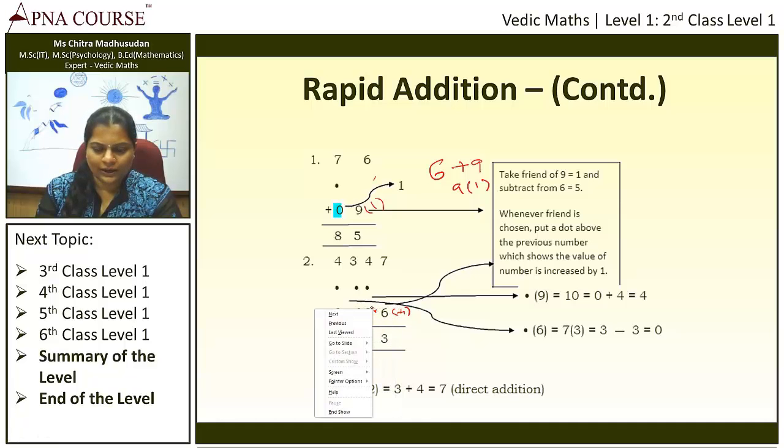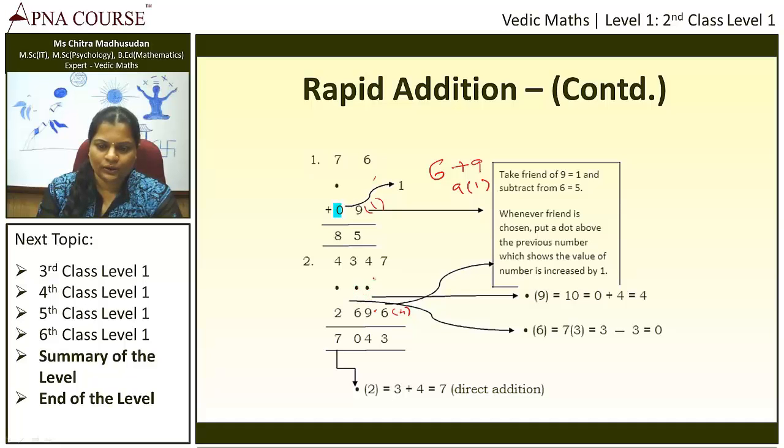And also, in this case, if you keep the dot on the top of number 9, it will be increased as 10. So here, 7 minus 4 is equal to 3. And since 9 has become 10, we leave 0 here and put 1 here. So we will keep the dot here. So 4 minus 0 or 4 plus 0 will be 4 only.